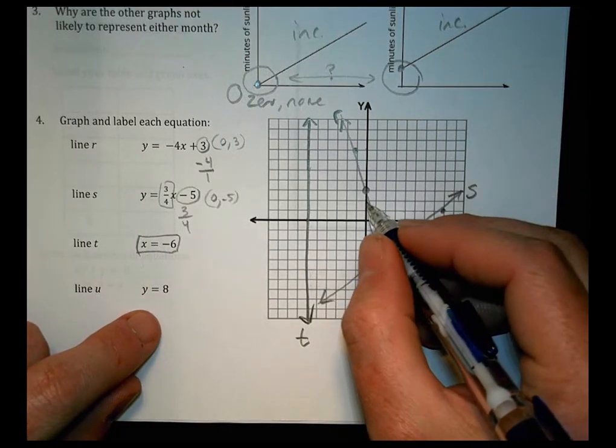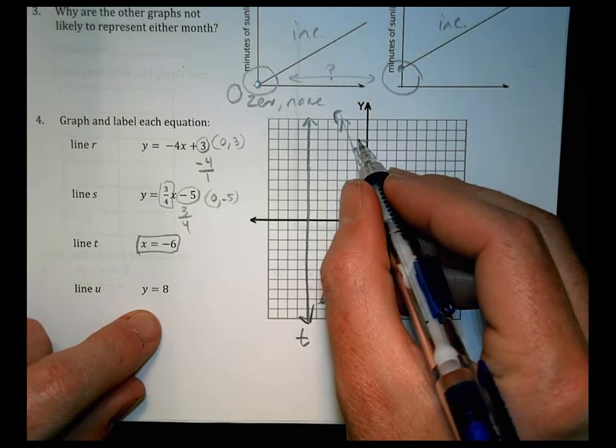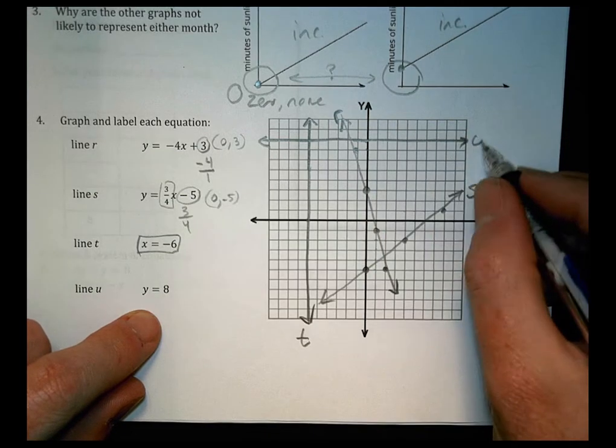y equals eight is up here at one, two, three, four, five, six, seven, eight. And so we're going to draw a line at eight all the way across, and that's going to be line u.